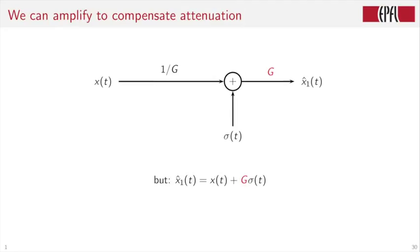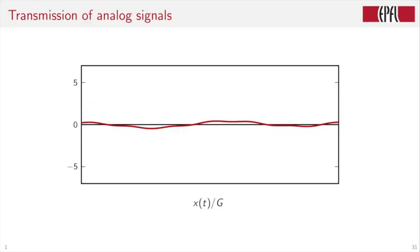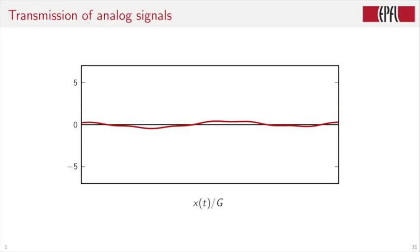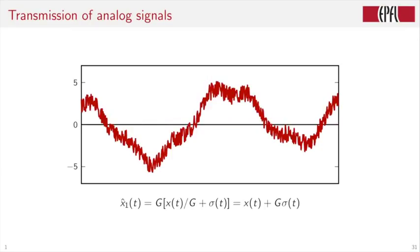How do we recover a good reproduction of X of T? Well, we can compensate for the path loss. So we multiply by G to get X hat one of T. But the problem is that X one hat of T is X of T. That's the good news plus G times sigma of T. So the noise has been amplified. Let's see this in action. We start with X of T. We scale by G. We add the noise. We multiply by G. And indeed, now we have a very noisy signal.